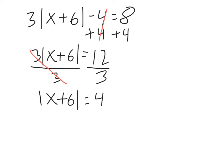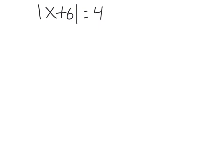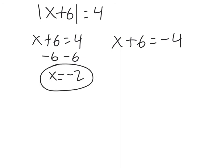So now we have two equations. So we have to have x plus 6 equals 4, and x plus 6 equals negative 4. And solve each. Undo the addition, subtract 6 from both sides, we get x equals negative 2. And subtract 6 from both sides, and that gives us x equals negative 10.